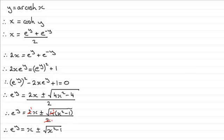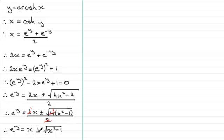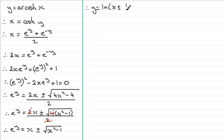So we've got e to the y equals x plus or minus the root of x squared minus 1. Taking the natural log of both sides, we end up with y equals the natural log of x plus or minus the root of x squared minus 1.